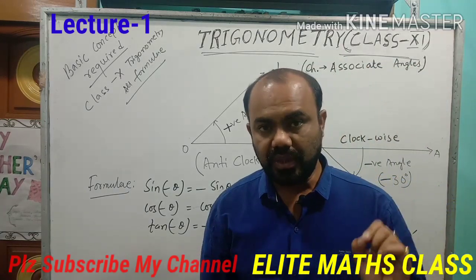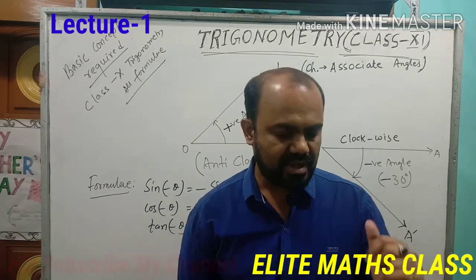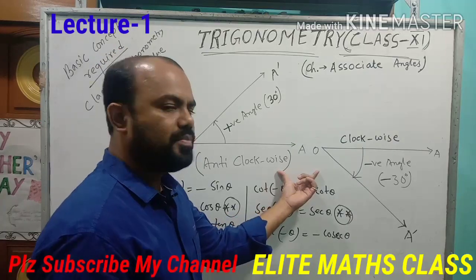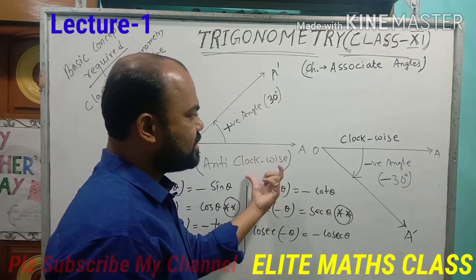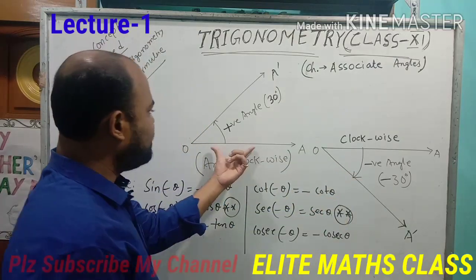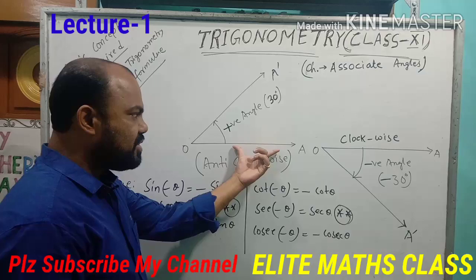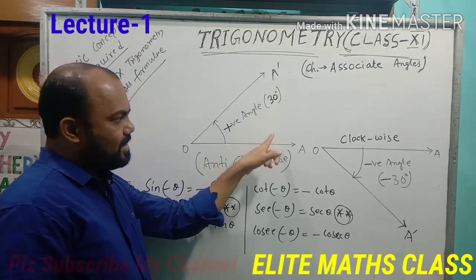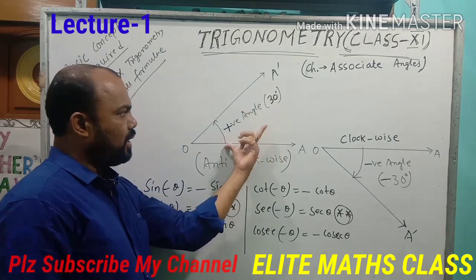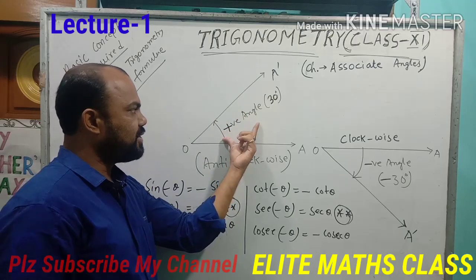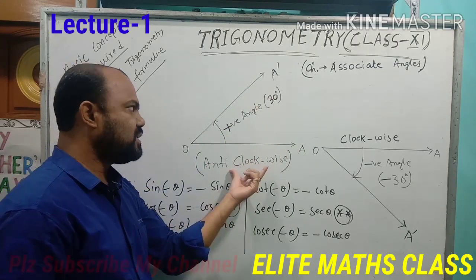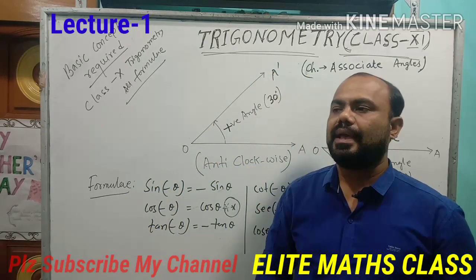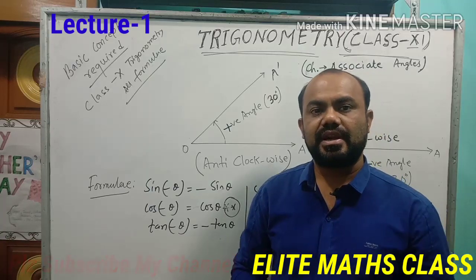Now, what are the main new concepts of class 11 trigonometry? First thing — see, two angles are drawn here. This is the concept of positive angle and negative angle. See what is a positive angle and what is a negative angle. In the first figure, OA is the initial line and the angle AOA' is created by anticlockwise rotation of the initial line OA. When OA is rotated anticlockwise, the angle AOA' is created. If any angle is created by anticlockwise rotation of the initial line, then the angle is considered as a positive angle.